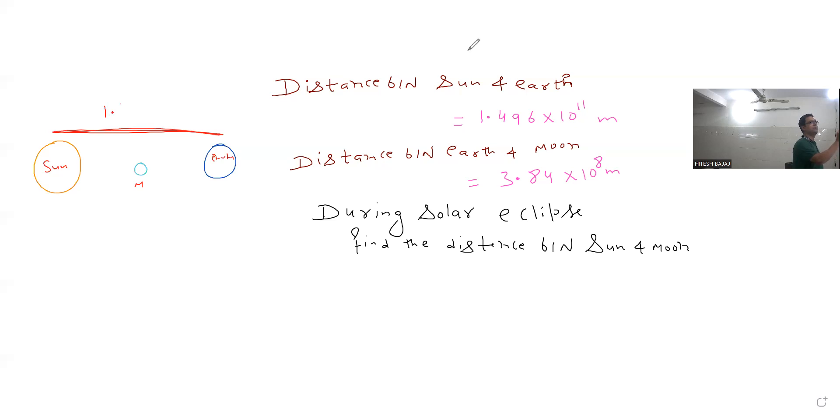This is 1.496 into 10 to the power 11, the complete distance. And distance between earth and moon is 3.84 into 10 to the power 8 meters. Distance is minus: 1.496 into 10 to the power 11 meters minus 3.84.